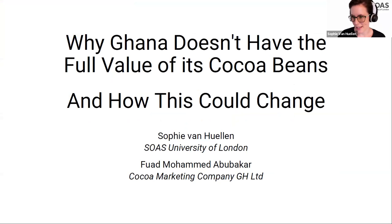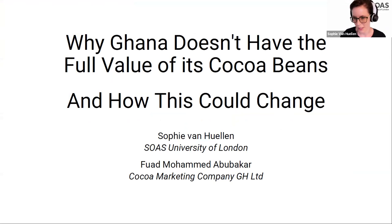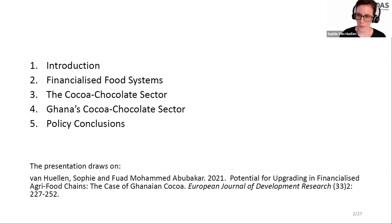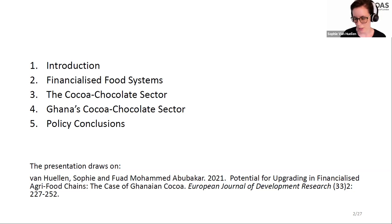As Tobias said, we pose the question: why doesn't Ghana have the full value of its cocoa beans, and how could this change? We look at the cocoa-chocolate sector as a whole rather than just focusing on cocoa beans. I will do the first half of the presentation, then Fuad will take over the second half. We have four parts: a quick introduction, a brief overview of the literature on financialized food systems, the cocoa-chocolate sector generally, and then Ghana's sector specifically, concluding with policy discussions.